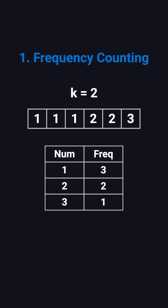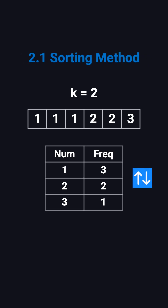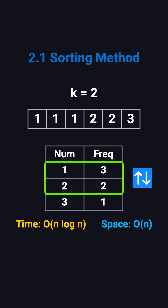Now, there are three common approaches to find the top k elements. The first one is the sorting method. We take all the elements in the hash map, sort them by their frequencies in descending order, and then pick the top k. It's simple and clear, but since sorting takes time, the complexity is O(n log n).